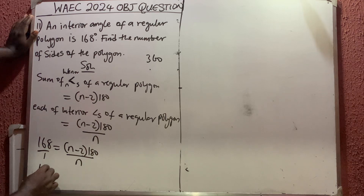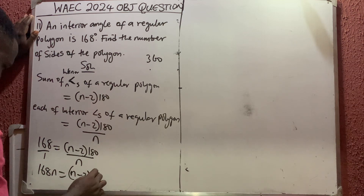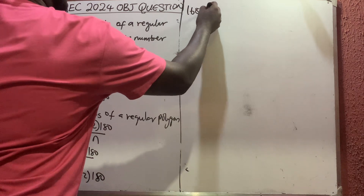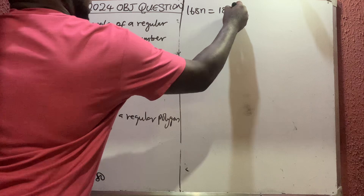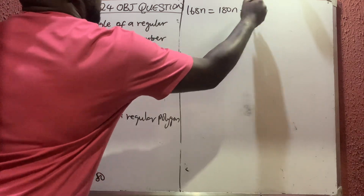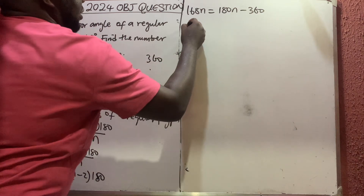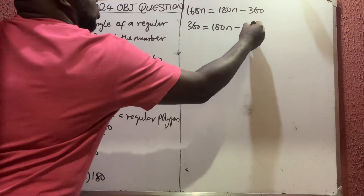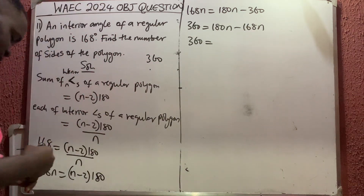Now we cross-multiply. 168 times n equals (n minus 2) times 180. Expanding the right side gives us 180n minus 360. So we have 168n equals 180n minus 360.